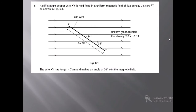It's question number 6, and it states: a stiff straight copper wire XY is held fixed in a uniform magnetic field of flux density 2.6 × 10⁻³ tesla, as shown in figure 6.1. This wire is inclined at an angle of 34 degrees and the length of the wire is 4.7 cm.